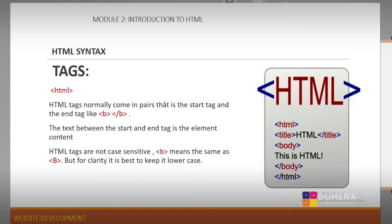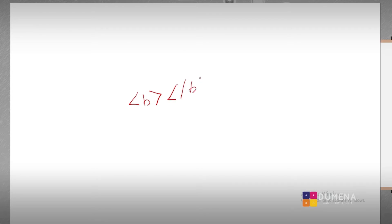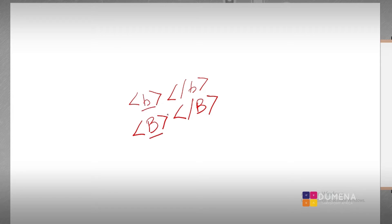An HTML tag is made up of a less-than sign and a greater-than sign. HTML tags normally come in pairs — the start tag and the end tag. The text between the start and end tag is the element content. HTML tags are not case sensitive, which means if we write a tag in small letters, HTML still reads it the same way. HTML reads the small letter B the same as the capital letter B.